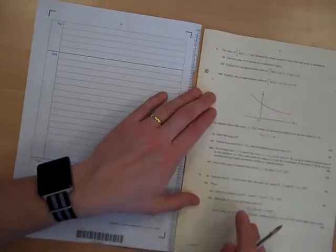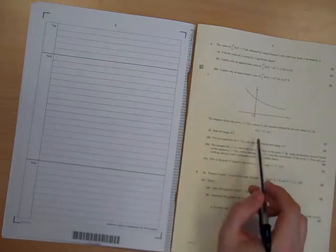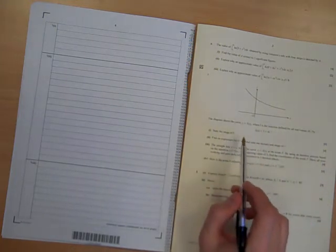Okay, flying through it. Question 7 now. The diagram shows the curve Y equals f of x, where f is the function defined by our values by that. Take the range of f.